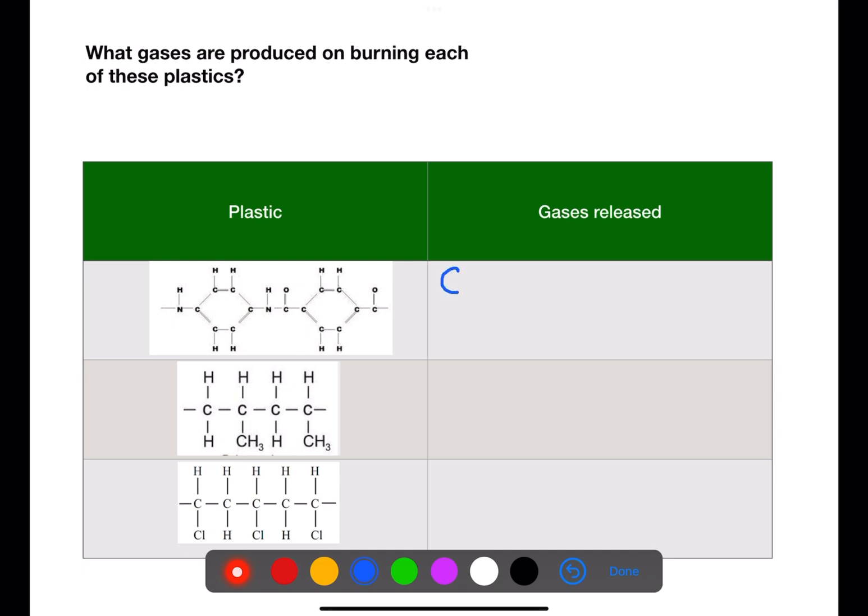This first plastic contains carbon and hydrogen. This will produce carbon monoxide on burning. This plastic also contains nitrogen. This means it will also produce hydrogen cyanide when it is burned.